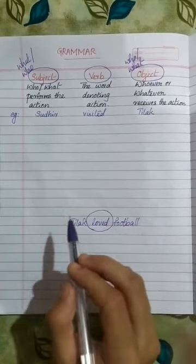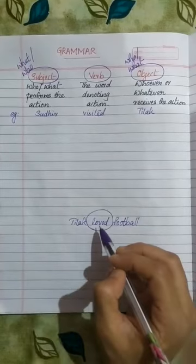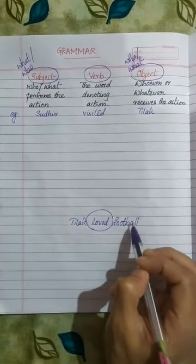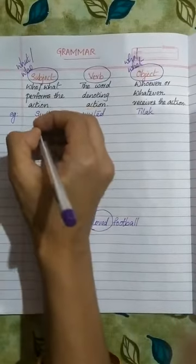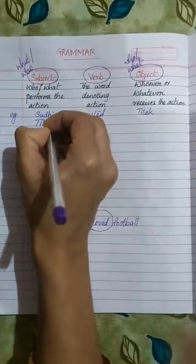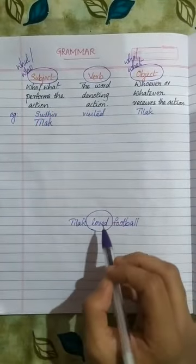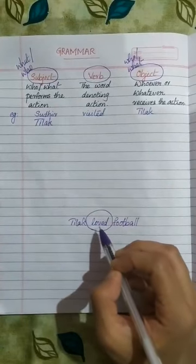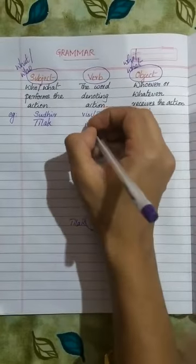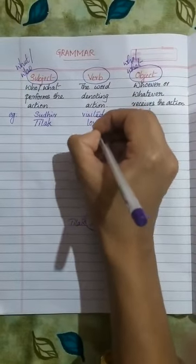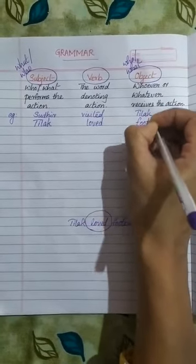In order to find out the subject, we ask who or what before the verb. Who loved? Tilak loved football — so Tilak is the subject. Then, to find the object, we ask: Tilak loved what? The answer is football, so football is the object. Loved is the verb and football is the object.